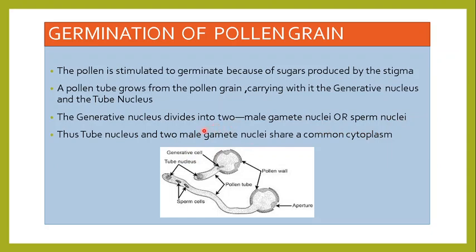There will be two male gamete nuclei. The tube nucleus and the two male gamete nuclei share a common cytoplasm, as you can see here — two sperm nuclei and one tube nucleus. All three do not have cell walls, so they all share the same cytoplasm. So after the pollen falls on the stigma, the pollen tube is further produced.